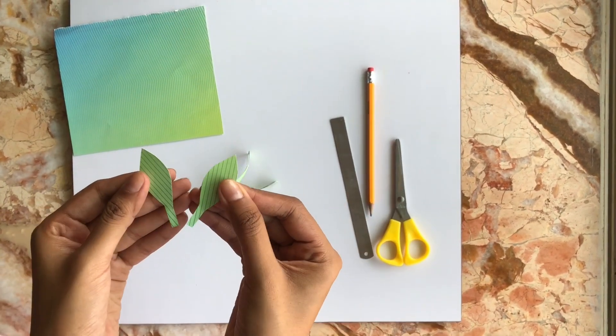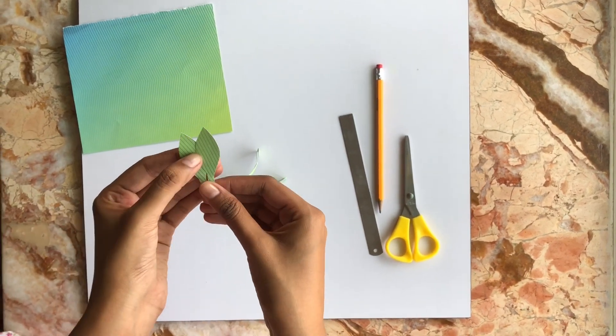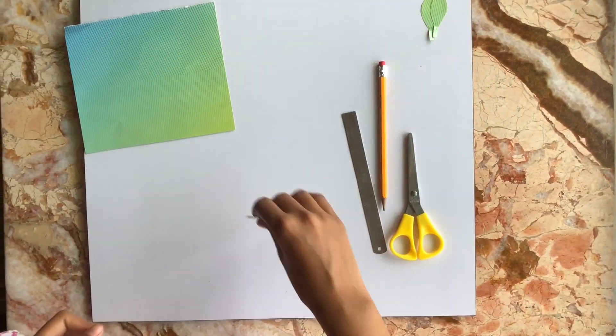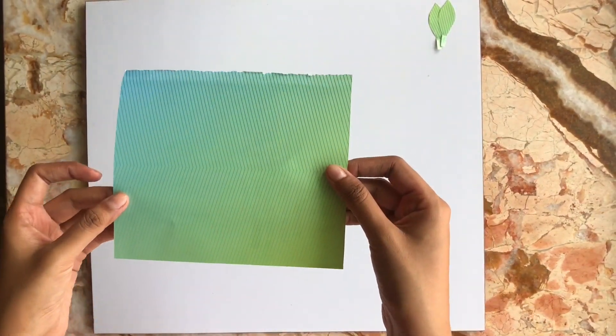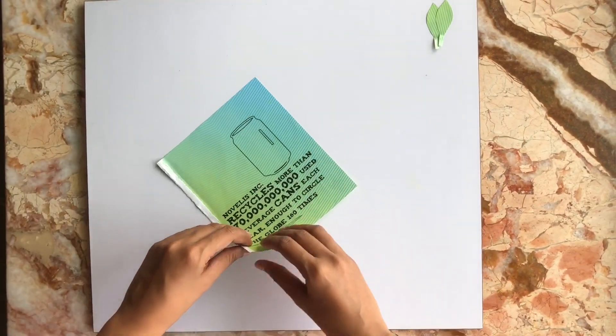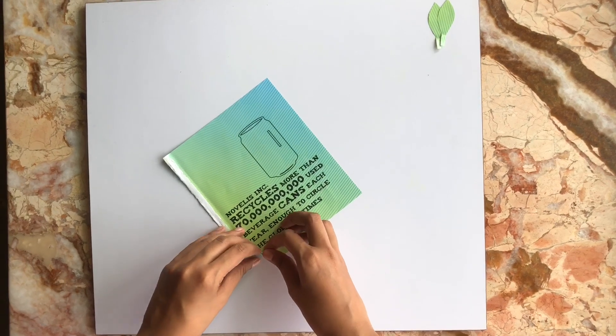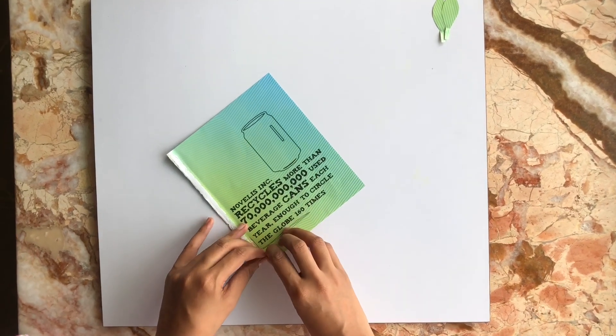We now have two leaves for our paper rose which we will set aside. Using the remainder of the paper, we'll slowly make a thin roll from one end of the diagonal.